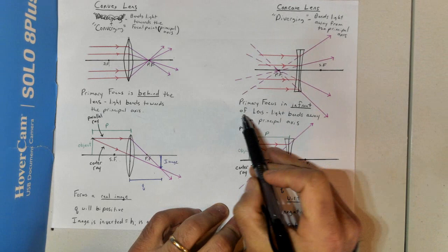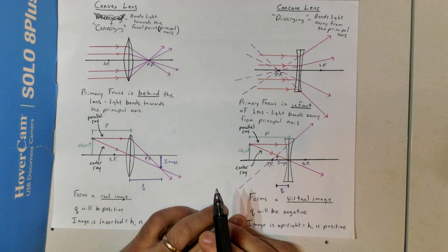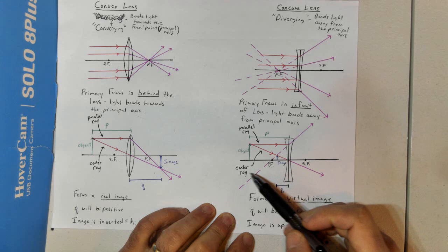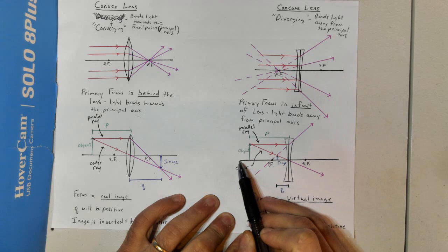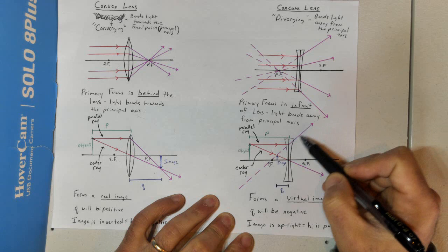The primary focus is on the same side as the object, in front of the lens, and it bends light away from the principal axis. To draw this, we still use parallel rays and center rays. Our parallel ray goes straight to the lens, parallel to the principal axis, and then bends back through the principal focus — which is in front, so the ray diverges away.